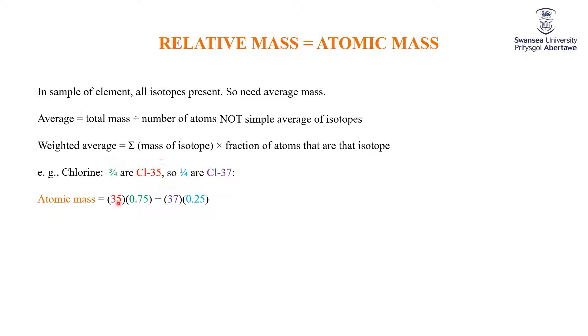And what are you adding up? The mass of each one, 35 here, 37 here, times the fraction 0.75 here, 0.25 there. Add that up and the relative mass of chlorine is 35.5. Now we would do some practice of this in class if you haven't quite got the full hang of this.